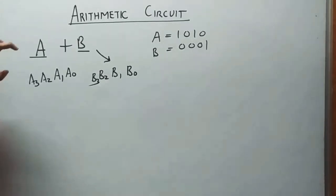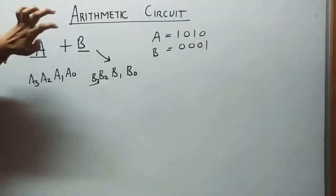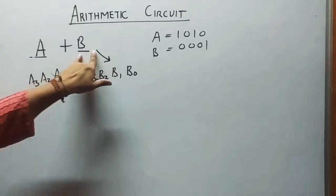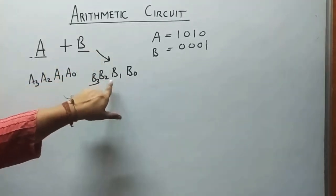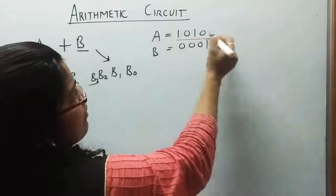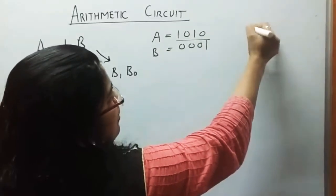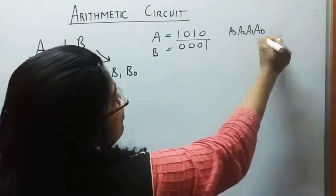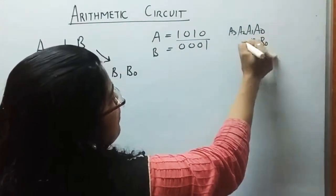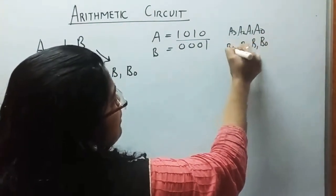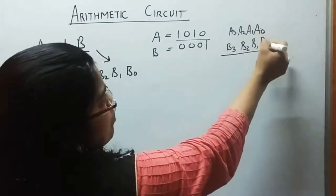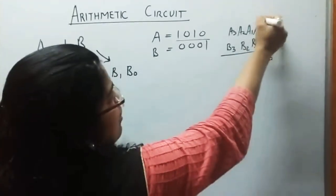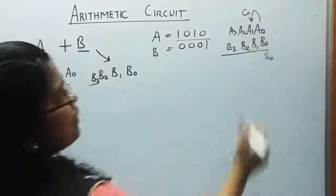When representing A and B, you can write A as a0, a1, a2, a3 — for example 1010 — and B as b0, b1, b2, b3. When adding these, a0 plus b0 may produce a sum, and there may also be a carry.